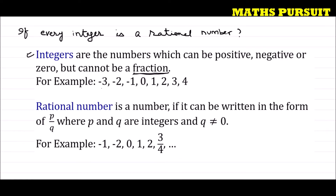Examples of integers are: -3, -2, -1, 0, 1, 2, 3, 4. Integers cannot be fractions — I cannot write 2/5, 0.7, or 1.5, because these are fractions and are not included in the definition of integer.